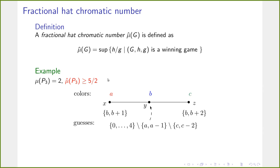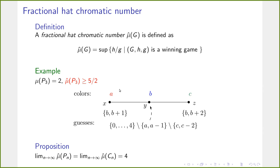The hat chromatic number of P3 is actually larger and we'll come to the exact value later. In fact, for paths and cycles, as N approaches infinity, the fractional hat chromatic number approaches 4. By contrast, the hat chromatic number of paths is at most 2, and the hat chromatic number of cycles oscillates between 2 and 3 depending on the length modulo 3. This shows the two parameters behave quite differently.